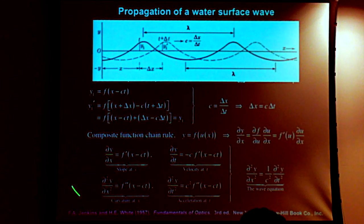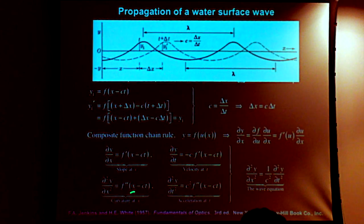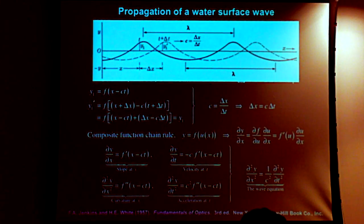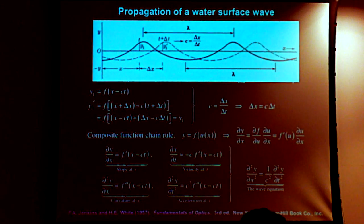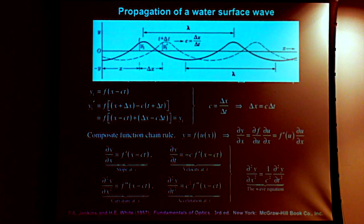When we form the second derivative with respect to distance and the second derivative with respect to time, f double prime appears in both. Equating these, the second derivative with respect to distance equals one over c-squared times the second derivative with respect to time. This is the wave equation. An equation of this form, generalized into three space dimensions plus time, governs all kinds of wave behavior — water waves, sound waves, and as we are concerned with here, electromagnetic waves.